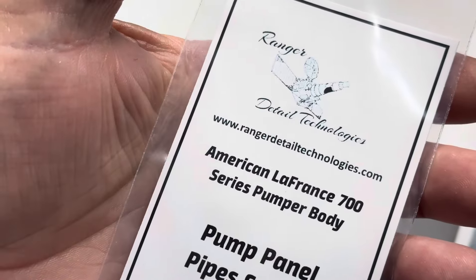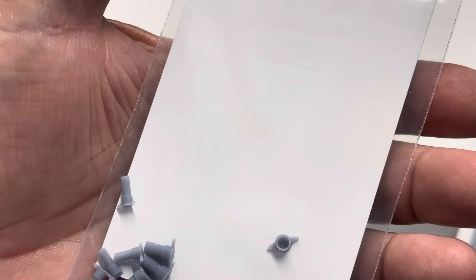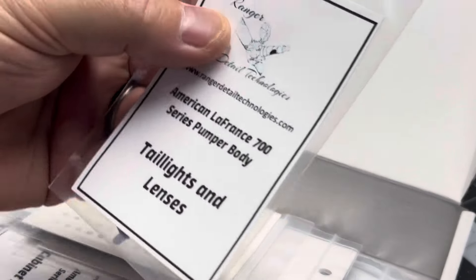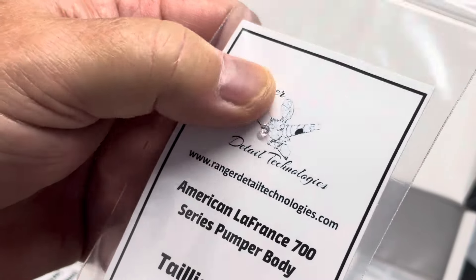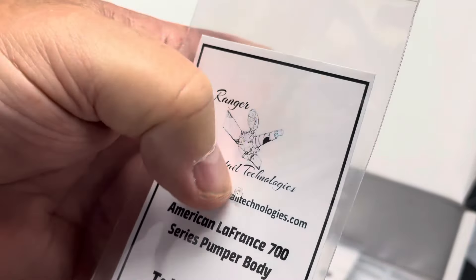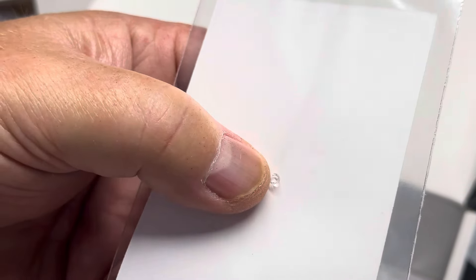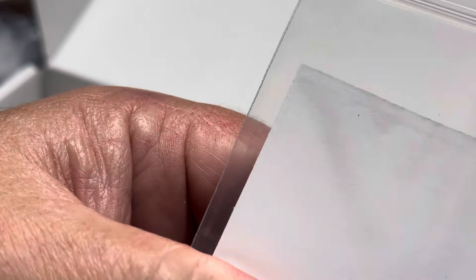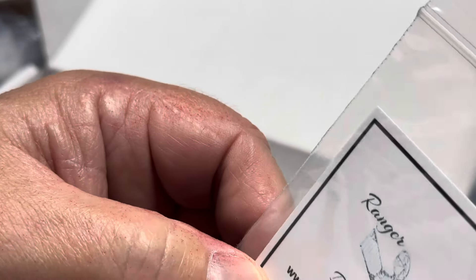You get the pump panel pipes and caps. Saves me from having to make a bunch of them. Tail light lenses and the little frames for them. Those are little bitty clear pieces for the tail light.